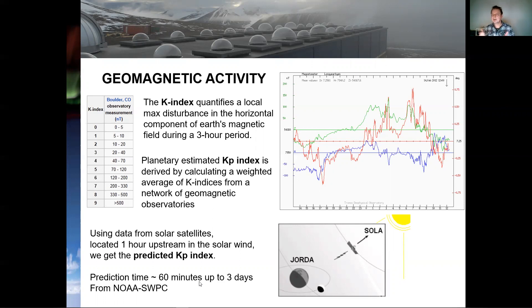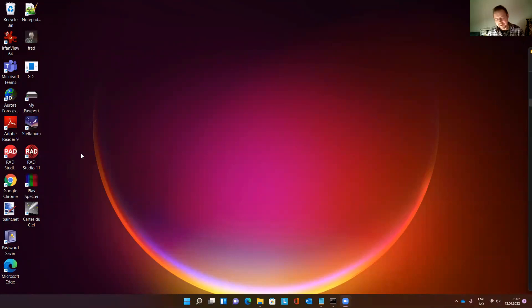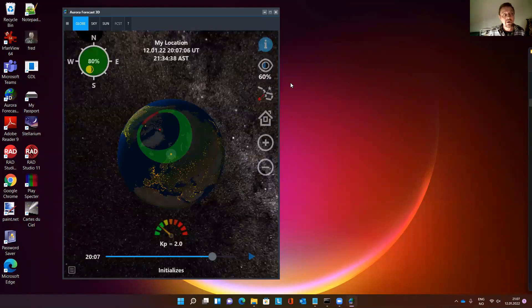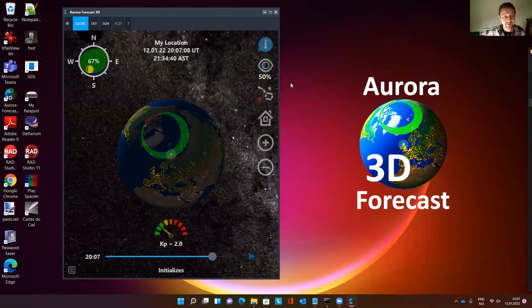Well, with the Kp index, we can easily calculate the size and the location of the aurora oval. And that is exactly what I do with my app named the Aurora Forecast 3D.